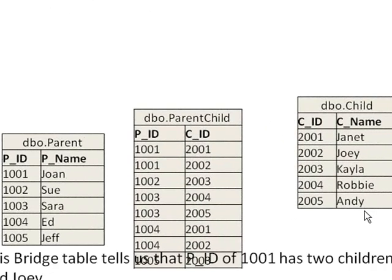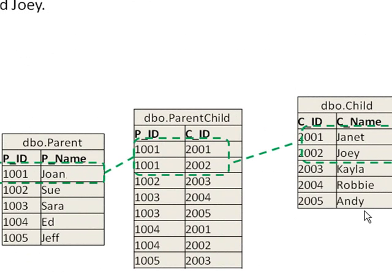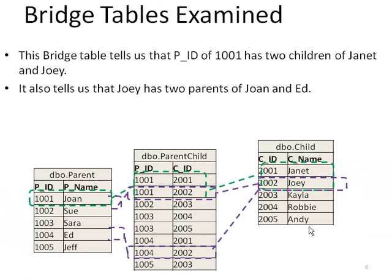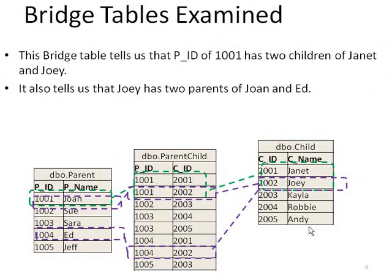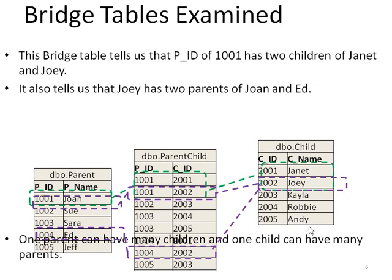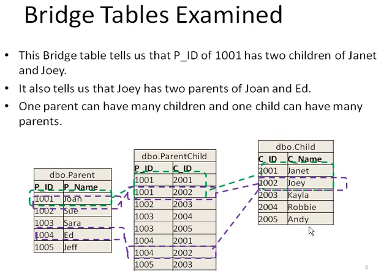Let's introduce the bridge table. The bridge table tells us that parent ID 1001 has two children, 2001 and 2002, which is Janet and Joey. It also tells us that Joey has two parents. As we can see, 2002 maps twice to the parent-child table, showing a parent of 1001 and 1004, which is Joan and Ed. One parent can have many children, as well as one child can have many parents. Therefore, a parent-to-child table is a many-to-many relationship.